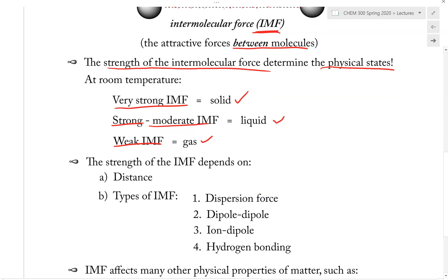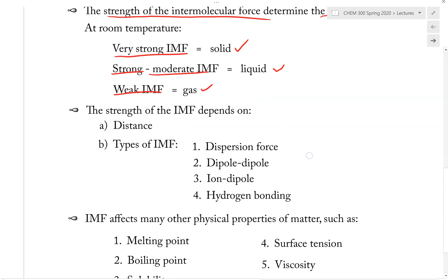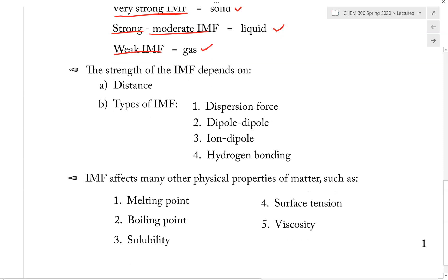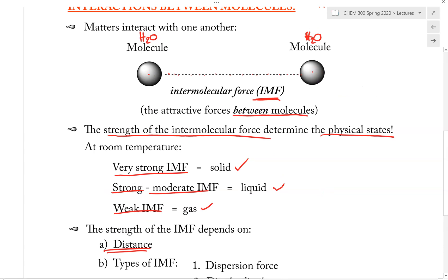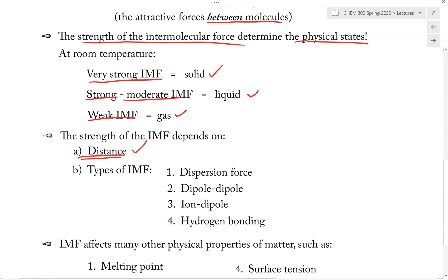So what we have seen here is that the strength of the IMF can affect the physical state of matter. It's important that we analyze what can affect the strength of the IMF. Here are several factors. First, the distance — how far are two molecules from each other. The closer the two molecules are together, the stronger the attraction will be, whereas the further they are apart, the weaker their intermolecular force will be. So distance plays a role in affecting the strength of the IMF.